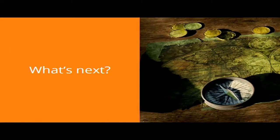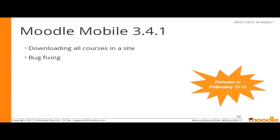What's coming? What are we planning to do in the following versions? In mobile 3.4.1, which will be released in February of next year, we are planning to add the ability to download all courses at once. Now you can download them one by one, but from this version you will be able to download all courses with only two clicks — having everything downloaded in your app or even on your laptop or computer. We will also fix some bugs.